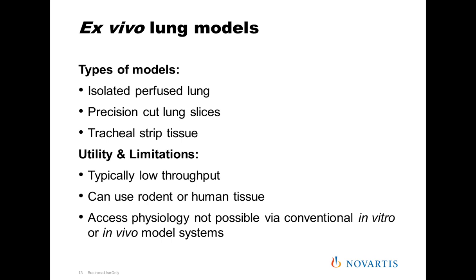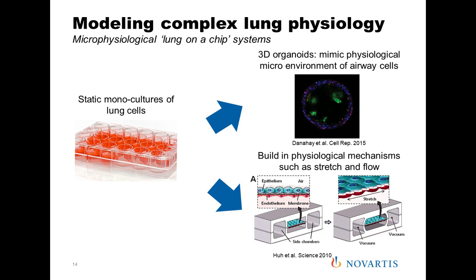There are a number of ex vivo systems available to respiratory drug discovery, but they often have very limited lifespans — the isolated perfused lung is really only viable for around six hours, extendable to 24 hours if you alter some parameters. Tracheal tissues are similarly useful only for very short-term experiments and are typically very low throughput. So while they address some challenges, they're still not getting close to providing a comprehensive physiological system using human tissue.